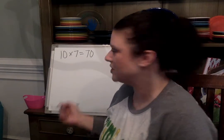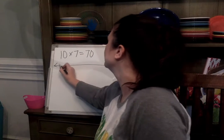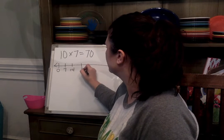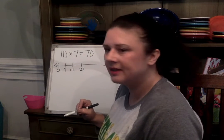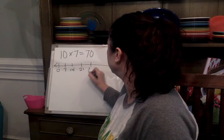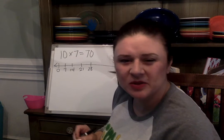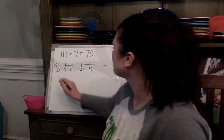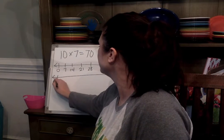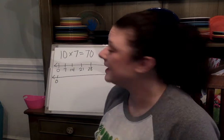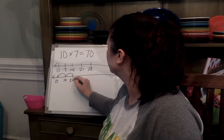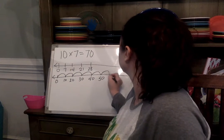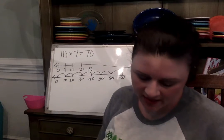Would it have been very efficient for us to think about counting by 7s? 7, 14, 21, 28 — once I get past that I'm starting to get confused, so that would not be very efficient. What if I'm looking at my number line and I think about counting by 10 seven times? 10, 20, 30, 40, 50, 60, 70. That would be more efficient.